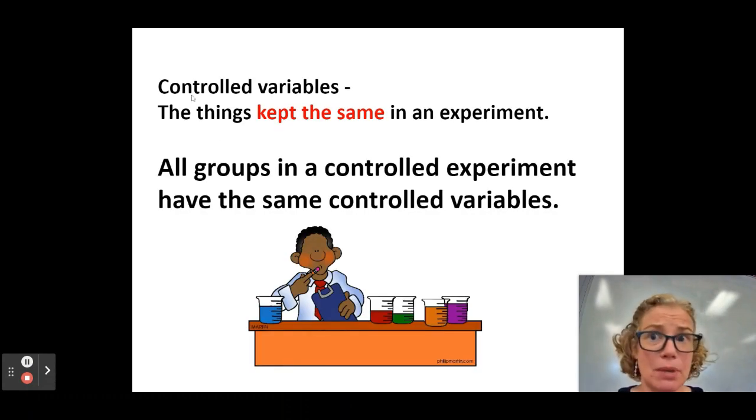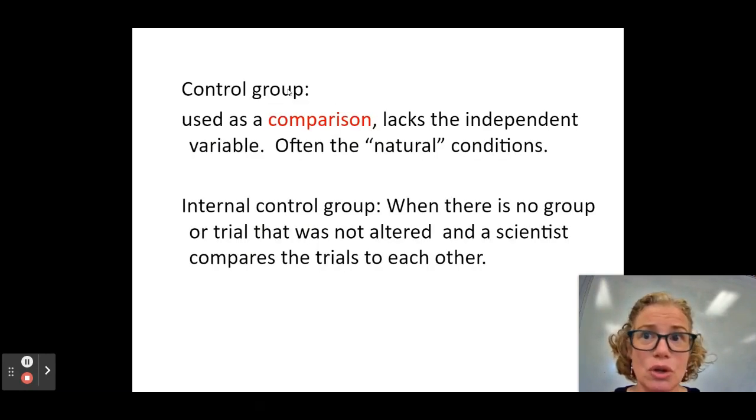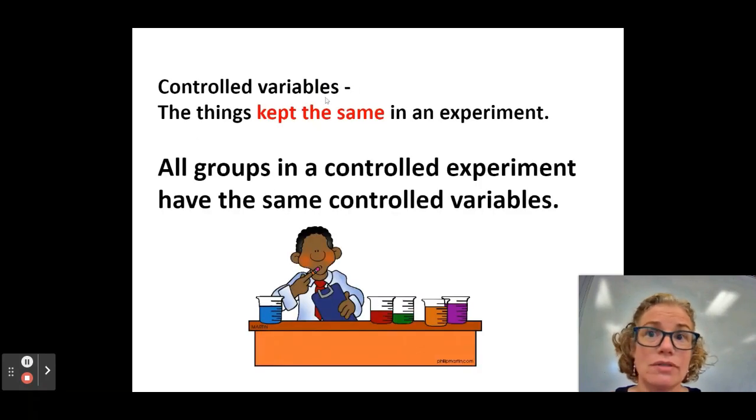All right so here's the other word that sounds so similar. Controlled variables. These are the things that we keep the same in an experiment and this always is a list. It's all the stuff that you have to keep the same in order to make sure it's a really fair experiment. The best memory tool I've come up with is this S. See how there's an S there? That tells me what I'm coming up with here is a list. Control group doesn't have an S. Controlled variables does and so that tells us okay yep we're gonna have a list and that makes sense because there's always many things we are keeping the same.